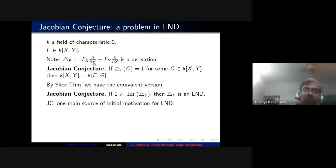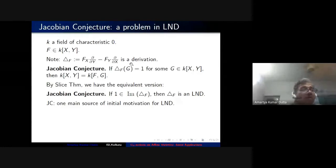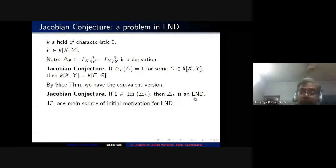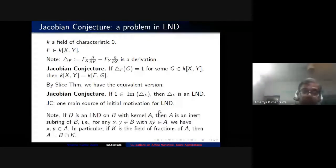The Jacobian conjecture can be put in the language of locally nilpotent derivations, though this reformulation hasn't helped solve it yet. The concept of locally nilpotent derivations does have its usefulness — the Jacobian conjecture can be stated in this language, even if that hasn't resolved it.